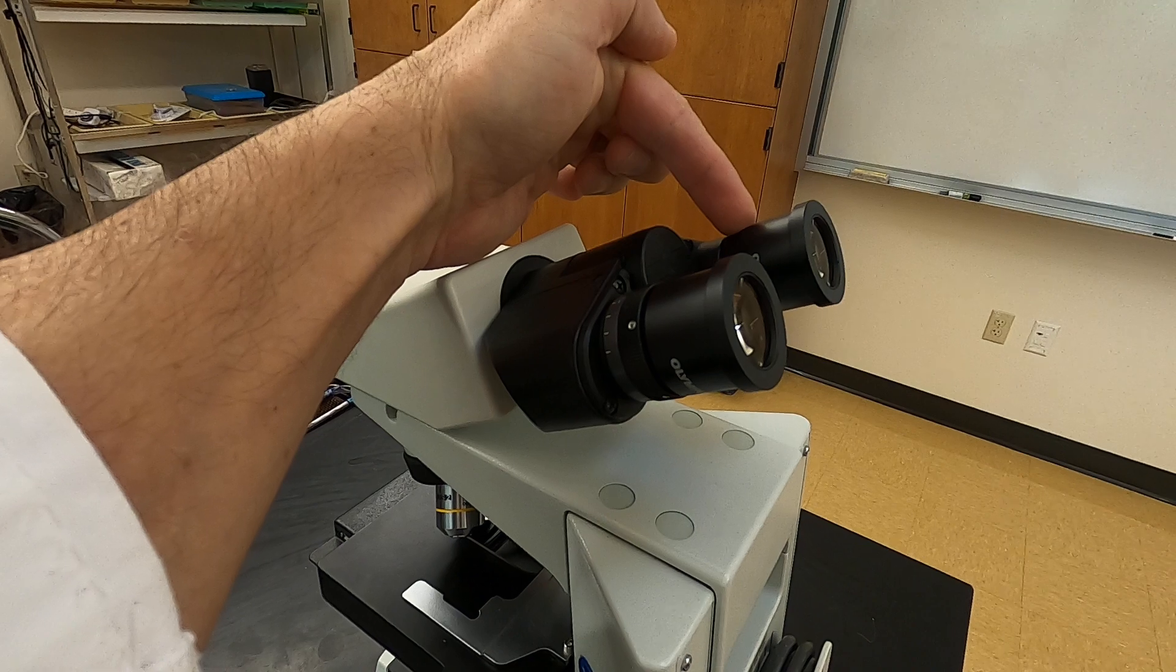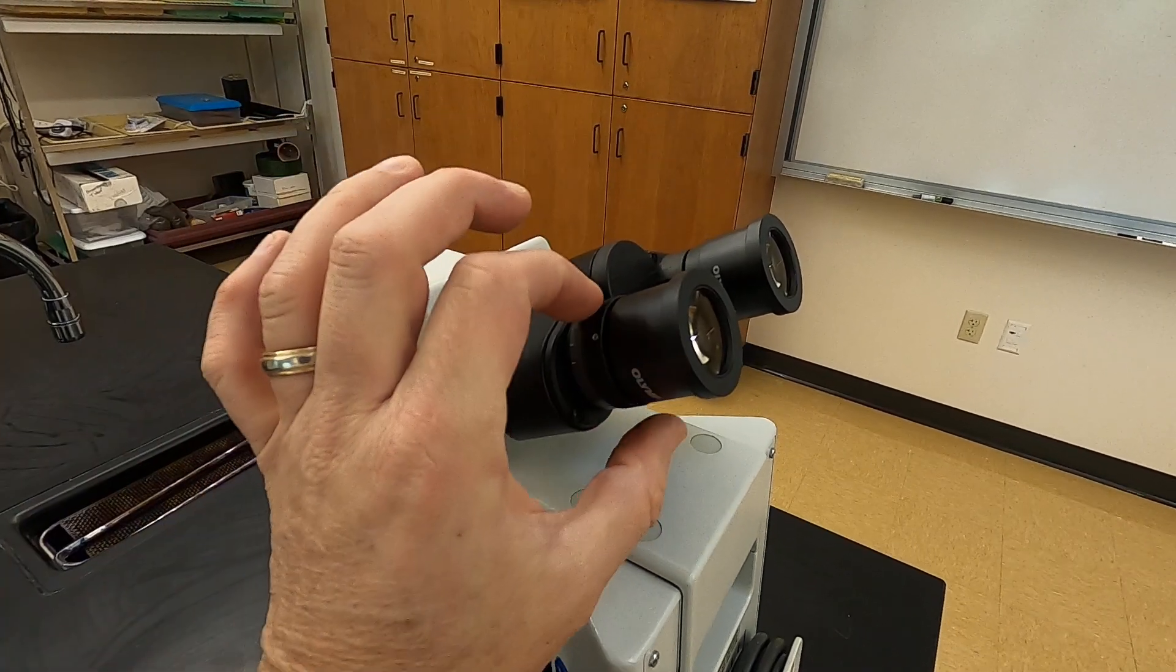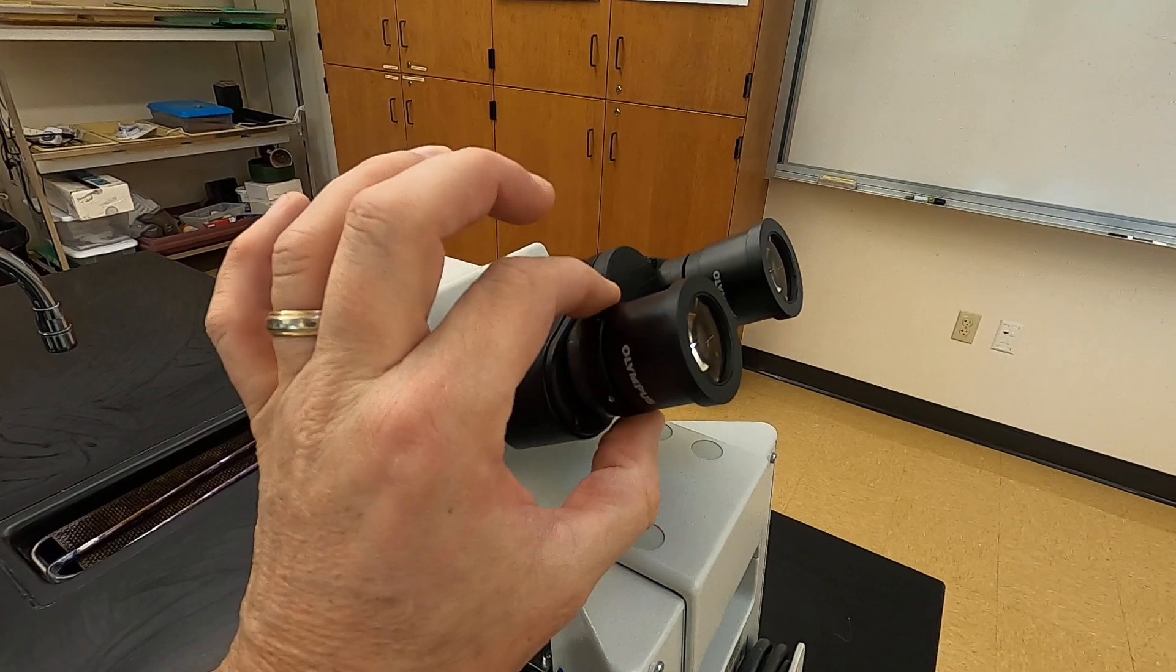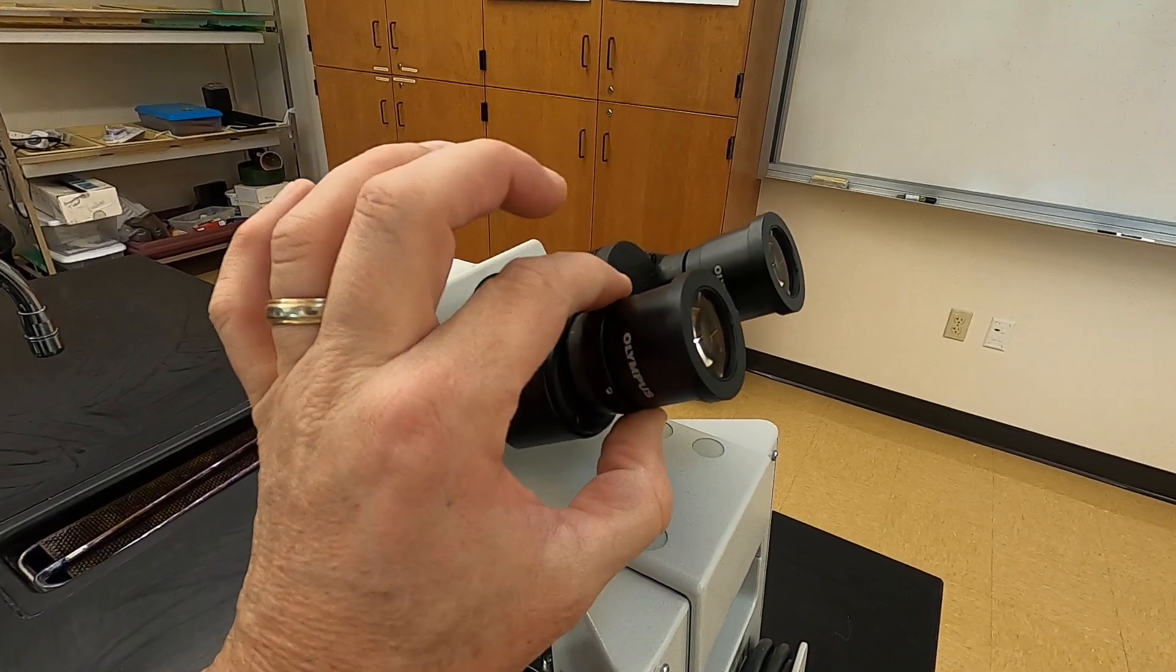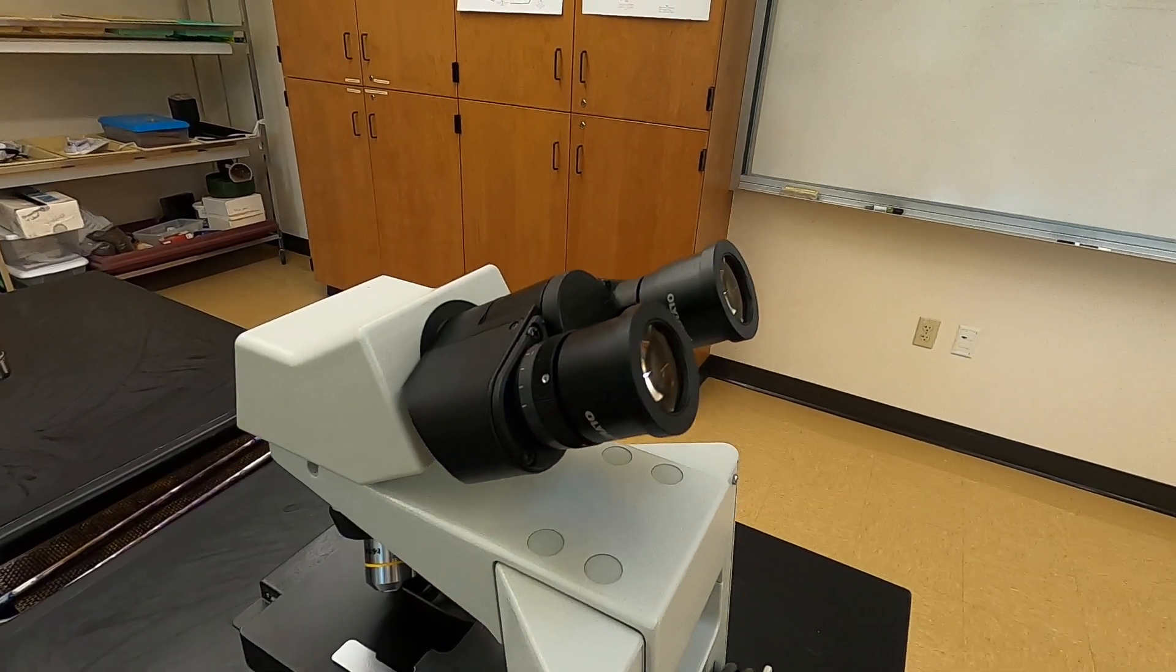When we're going to be doing our focusing, we're going to start focusing with the right eye first and get a nice clear image, and then we will use your diopter ring adjustment to adjust for differences in vision between your left and your right eye. We'll show you that a little bit later with some more practice.